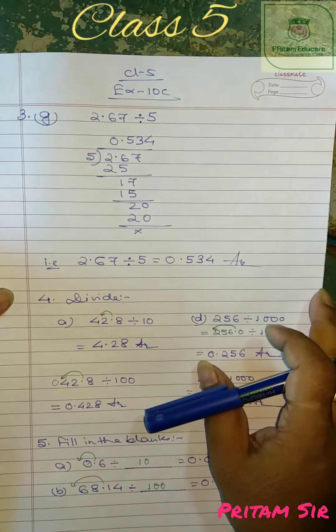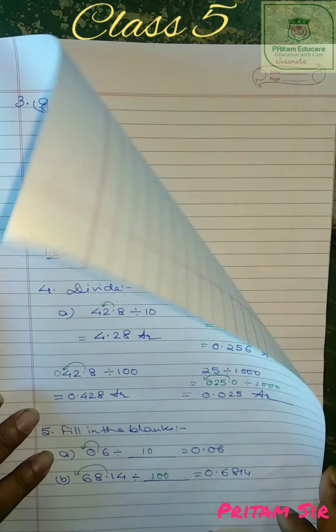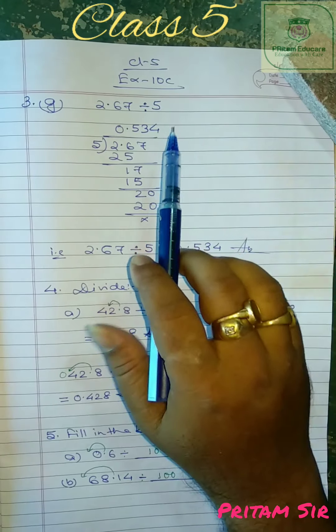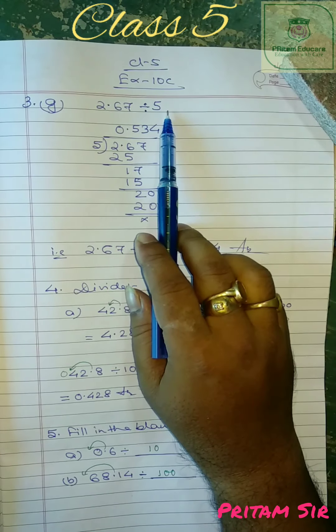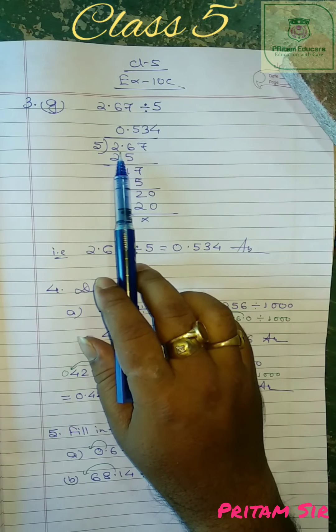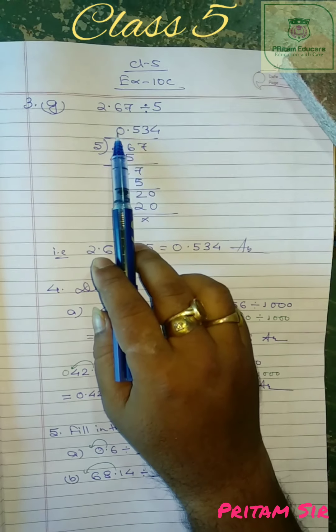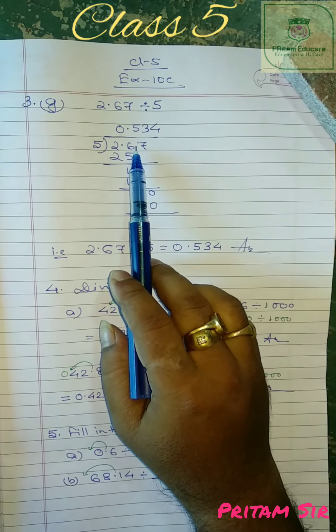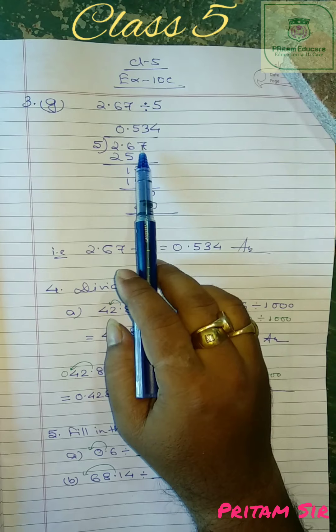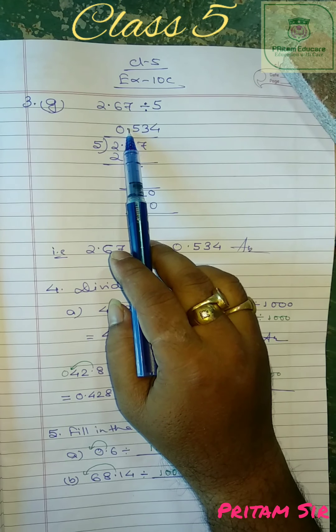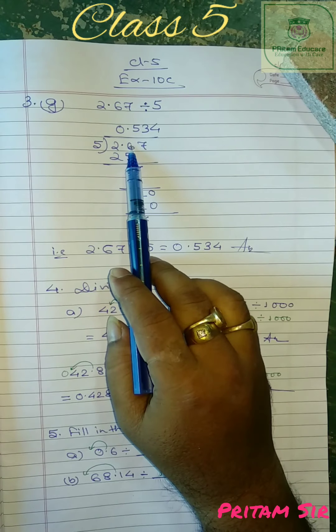Now we have 3g, 2.67 divided by 5. So 2 is smaller than 5. That is we have taken 0 first. Now we will take 6 also. So before taking 6, the decimal will shift to here.